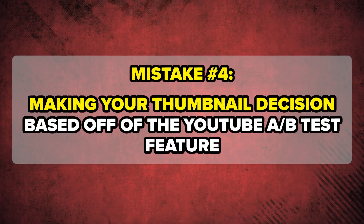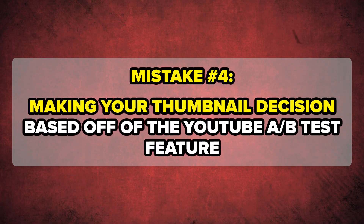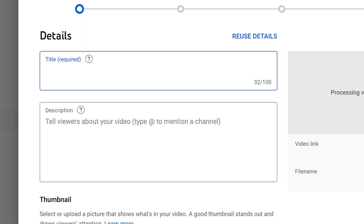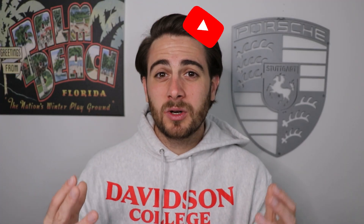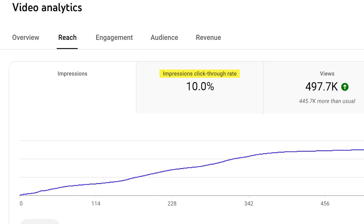Mistake number four is using YouTube's A/B test feature for thumbnails. I strongly suggest you do not do this. You should be using it for titles, but for thumbnails you want to skip this feature until YouTube actually fixes it. That feature is actually broken — instead of choosing the thumbnail that's getting you the highest click-through rate, which is the whole purpose of a thumbnail, YouTube is choosing the thumbnail that's getting you the most watch time. This will actually hurt your views because good watch time without a good CTR means you won't get the reach you want.